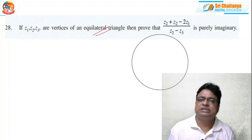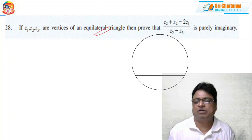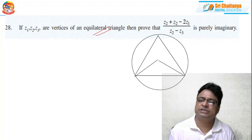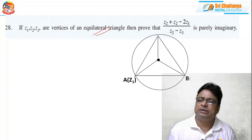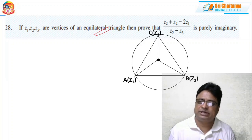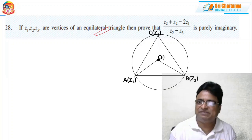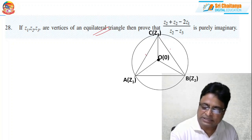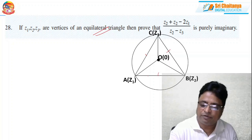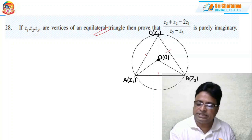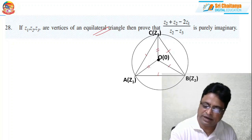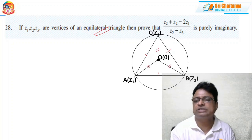This is about an equilateral triangle. I have considered this as my equilateral triangle A, B, C where A is Z1, B is Z2, C is Z3 are the vertices, and let O be the origin. Without loss of generality, O is the circumcenter. Since it is an equilateral triangle, all side lengths are equal — AB equals BC equals CA — and the radii OA, OB, OC are also equal since O is the circumcenter.